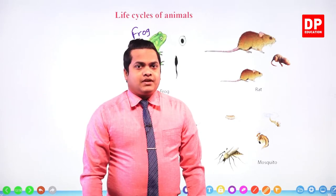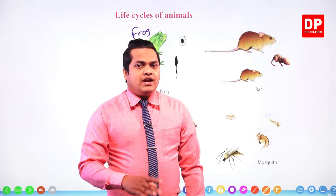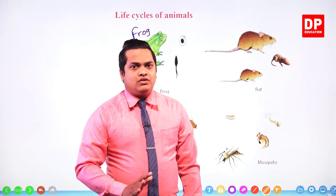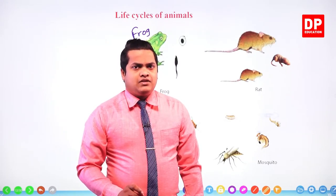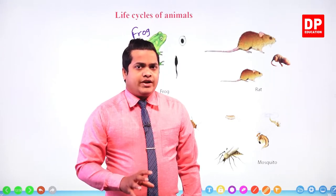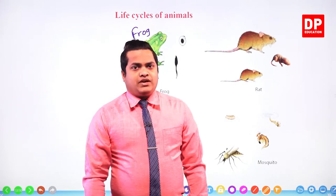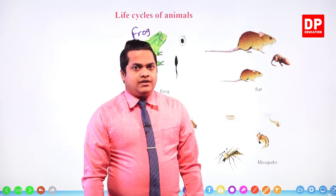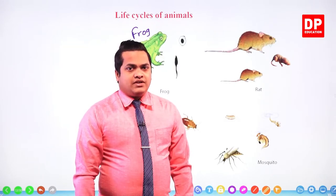Adult frogs are going to lay eggs near a water body — not in a water current, but in a pond where the water is somewhat still so that the eggs would not float here and there. Adult frogs lay eggs at a place where the water is still, not on a stream or water current.